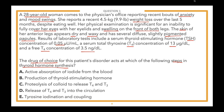We'll read the answer choices starting from the bottom to make sure you read all choices and don't bias yourself early. Answer choice E: tyrosine iodination and coupling. D: release of T4 and T3 into the circulation. C: proteolysis of colloid to release T4 and T3. B: production of thyroid stimulating hormone. A: active absorption of iodide from the blood. Go ahead and select the answer choice you think is correct.